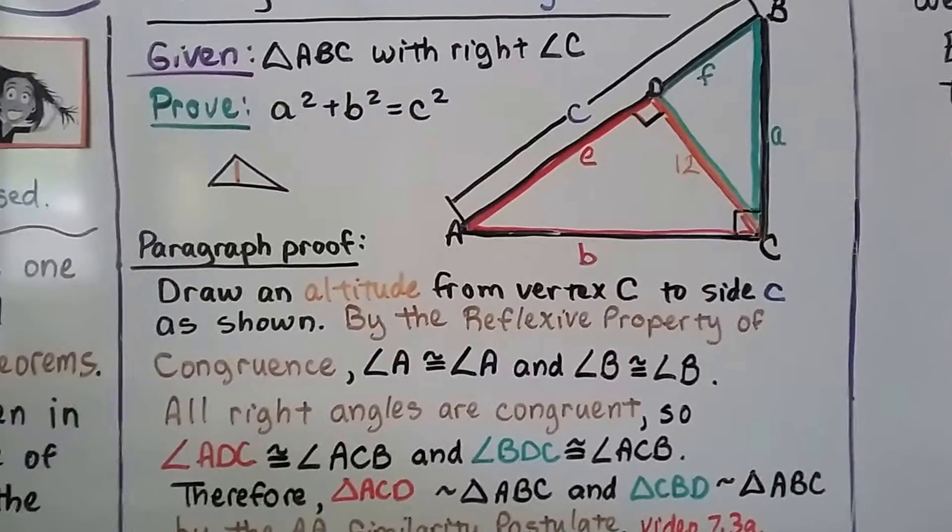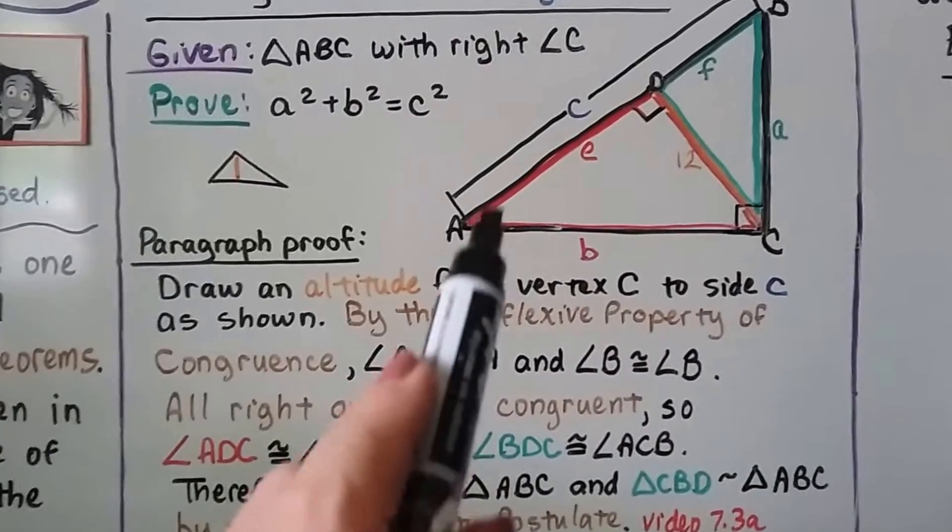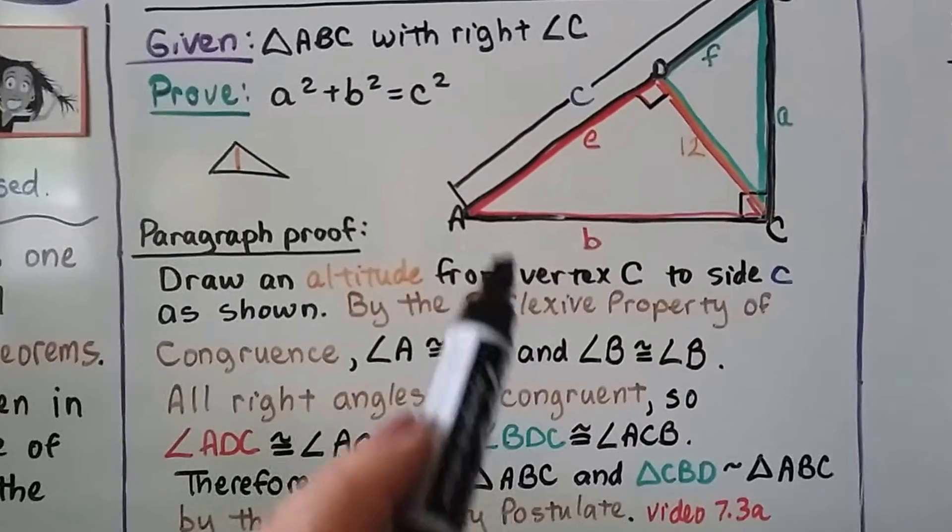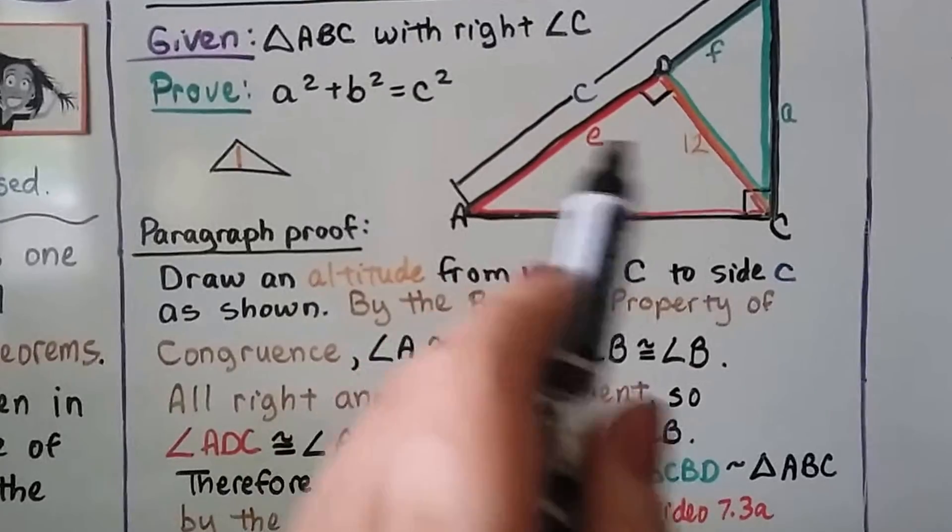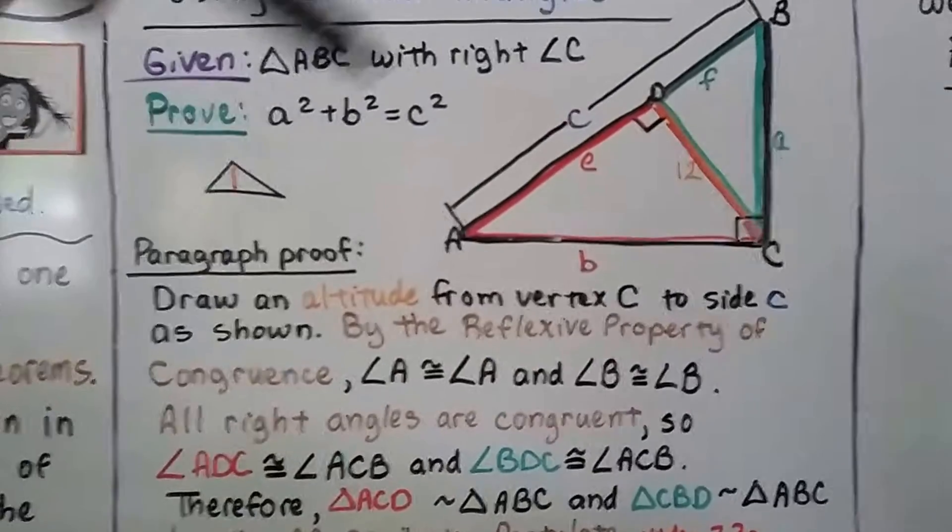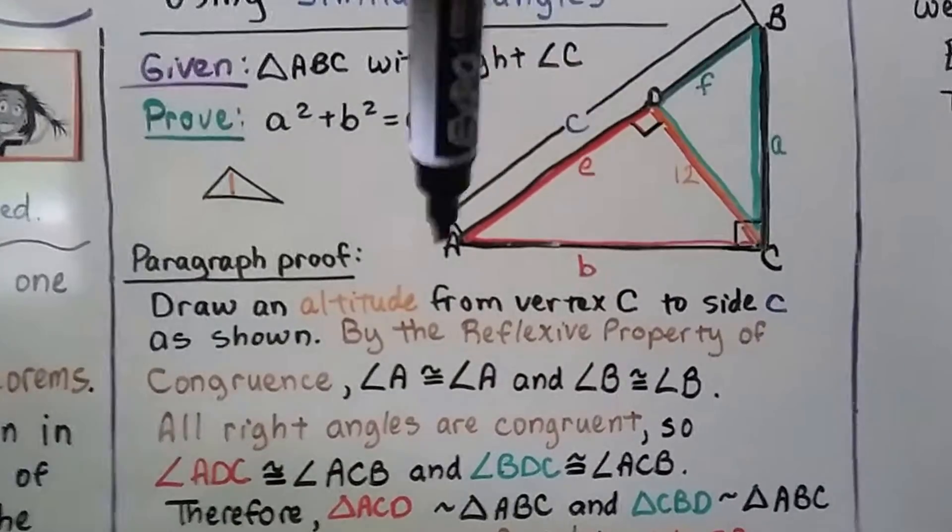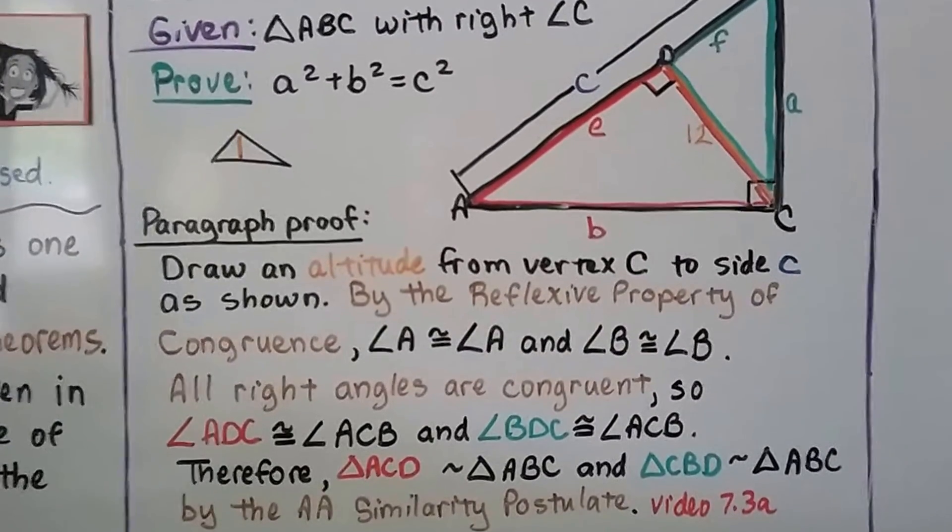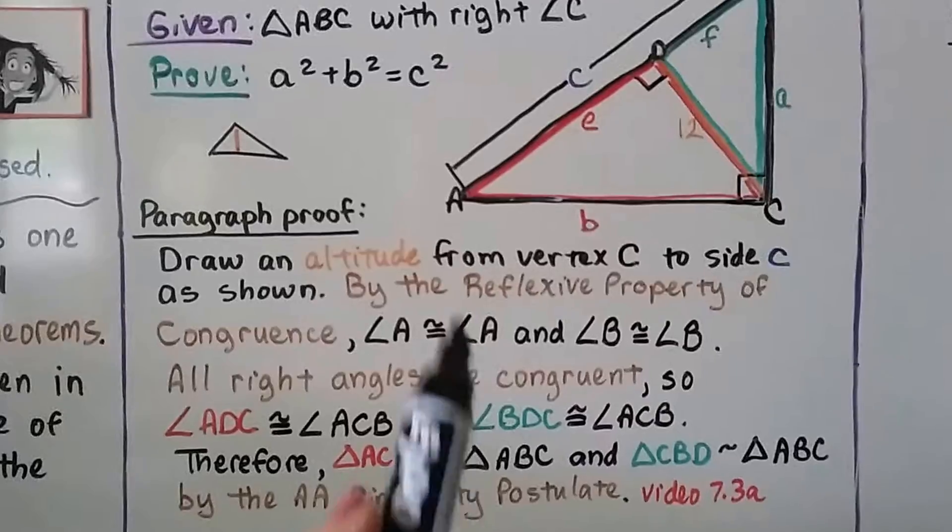And by the reflexive property of congruence, angle A for the big black triangle is congruent to angle A of this red triangle we've now made. And angle B for the big black triangle is congruent to angle B for the green triangle. And all right angles are congruent.